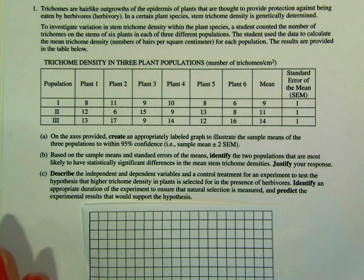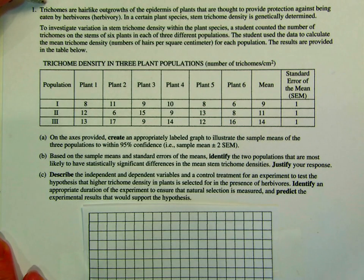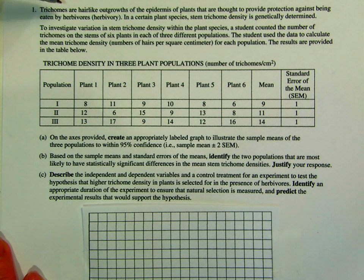When you read the stem of this question, notice that they tell you what trichomes are. Don't worry if you see something on the AP exam that you've never heard of before — they'll give you the background information you need to answer the question. They tell you trichomes are hairs on plants and that their purpose is to keep plants from being eaten by herbivores.